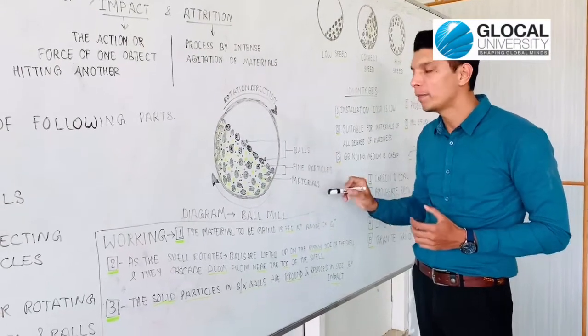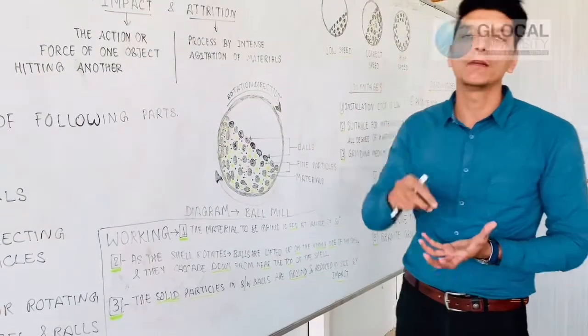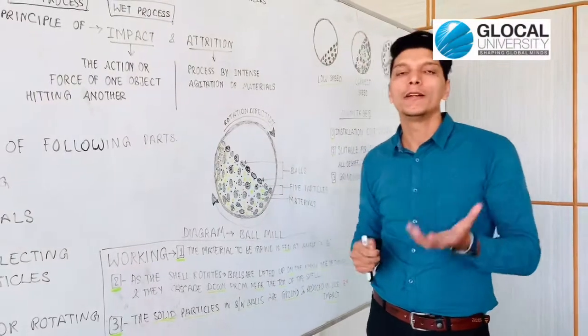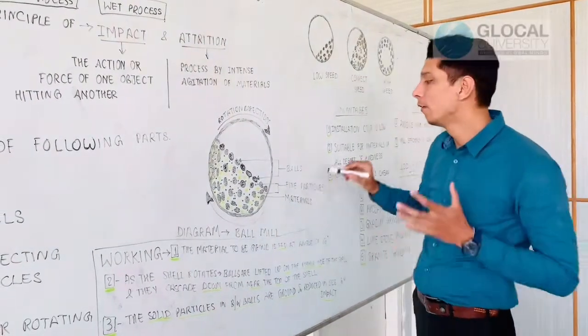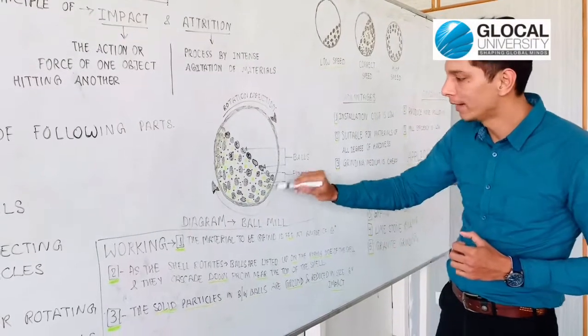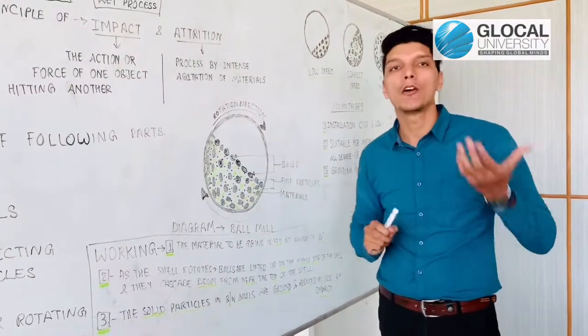After that, these fine particles continuously go through the balls and are converted into fine particles. That's why it is called fine particles. The material is the raw material.